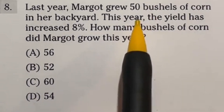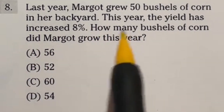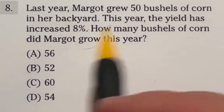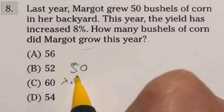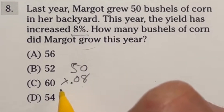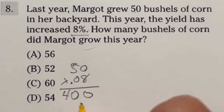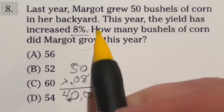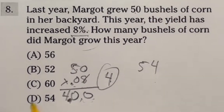Number eight: last year Margaret grew 50 bushels of corn. This year the yield increased 8%. How many bushels did she grow this year? We need to find 8% of 50 and add it back. Multiply 50 by 0.08: 8 times 5 is 40, move the decimal twice, giving 4. So 8% of 50 is 4. Then 50 plus 4 is 54. The answer is D.